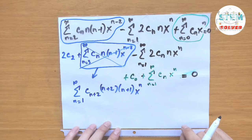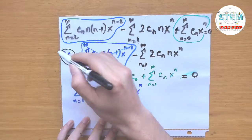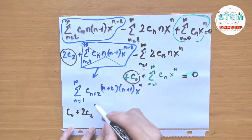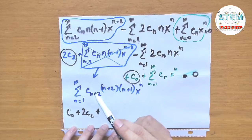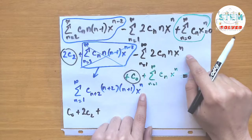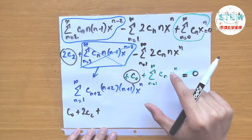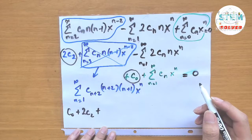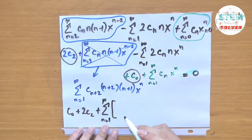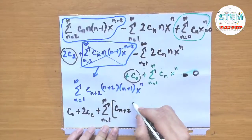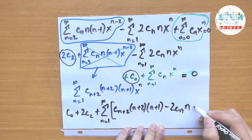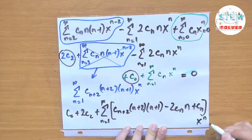Now combine like terms. We have the constant terms: 2c_2 plus c_0 equals 0. Then factor out x to the n for the remaining series, giving: the power series from 1 to infinity of [c_(n+2) times (n+2) times (n+1) minus 2c_n times n plus c_n] times x to the n equals 0.